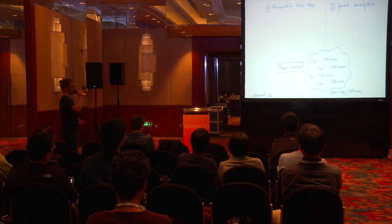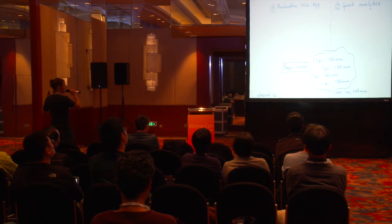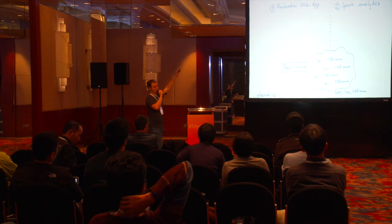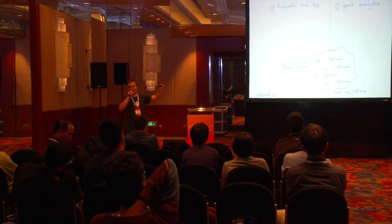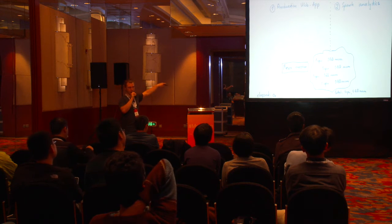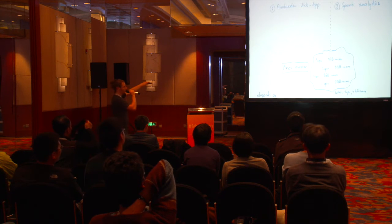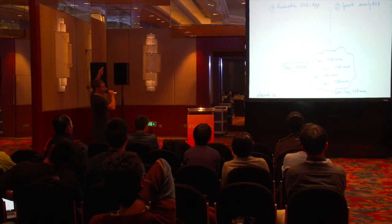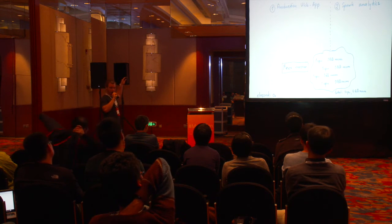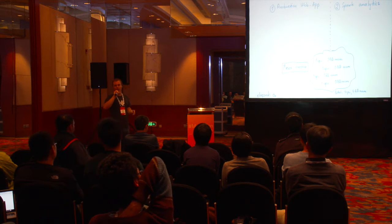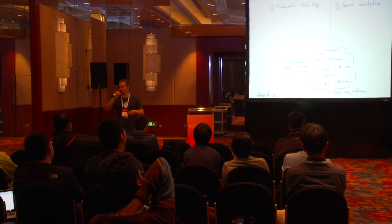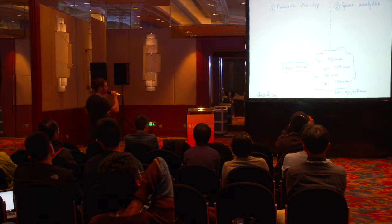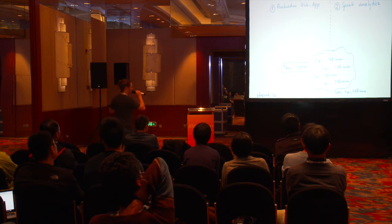Usually every solution starts with a problem. Suppose we have a Mesos cluster with four CPUs and four gigabytes of RAM — one big computer. There is a Mesos master, and we have two frameworks: one is a production application and one is Spark analytics. Spark may use up all resources that it gets.